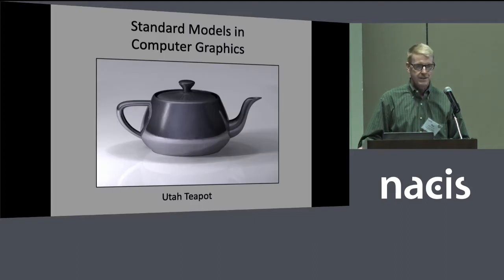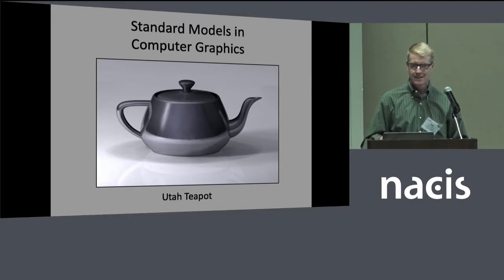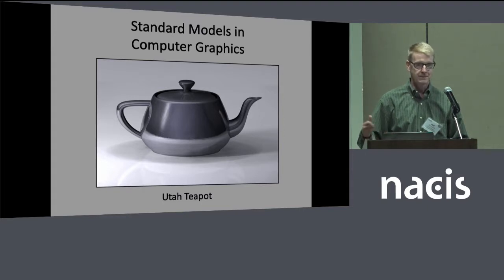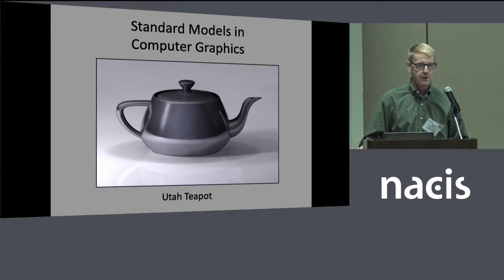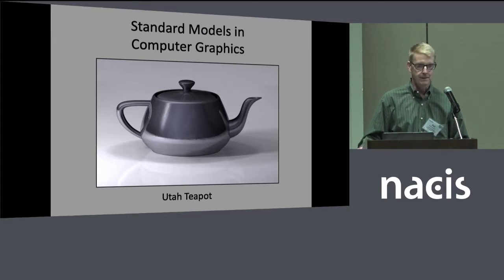There are a lot of different standard models out there. Some are more like tests — for network security or face recognition — where you can try an algorithm and see if it can pass a test. But that's not really what we're looking at here. We're looking at a standard digital elevation model where people could just take it, apply a different terrain rendering technique, and then be able to easily compare it with other renderings or cartographic products out there.